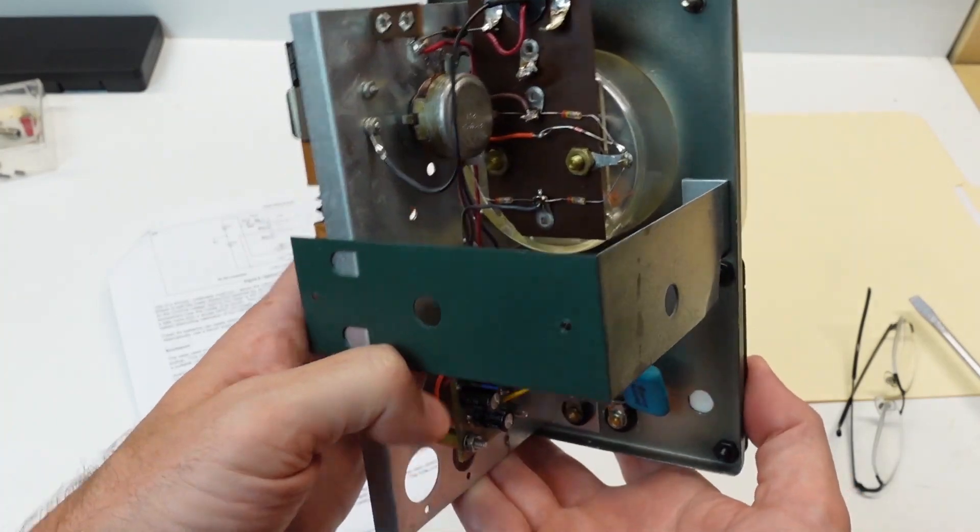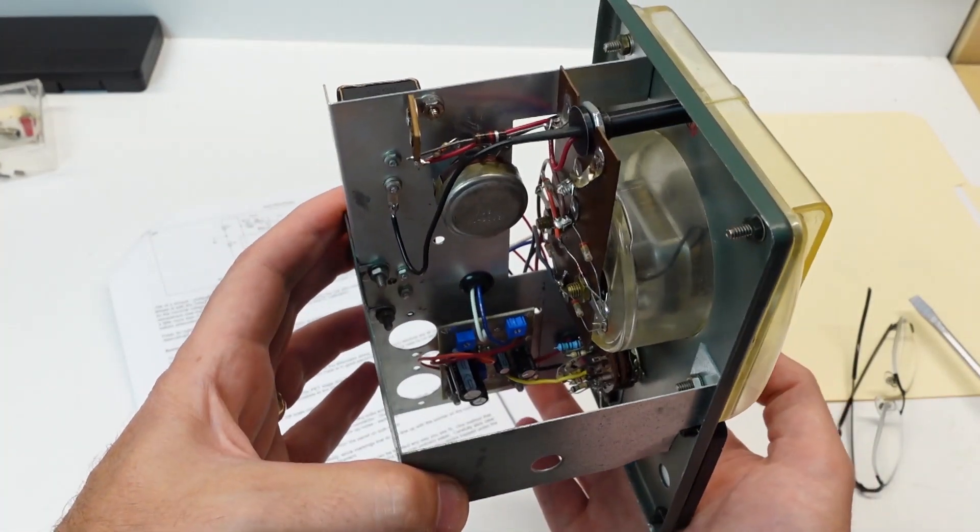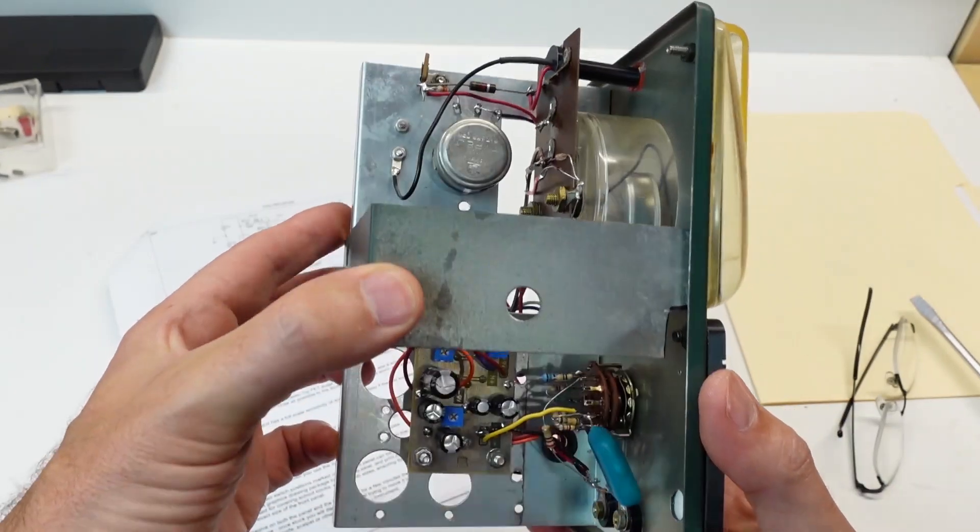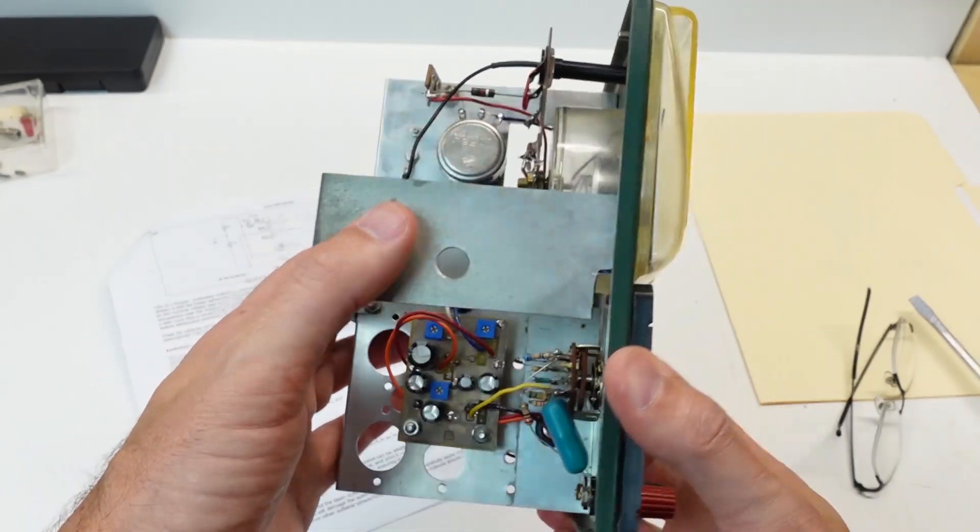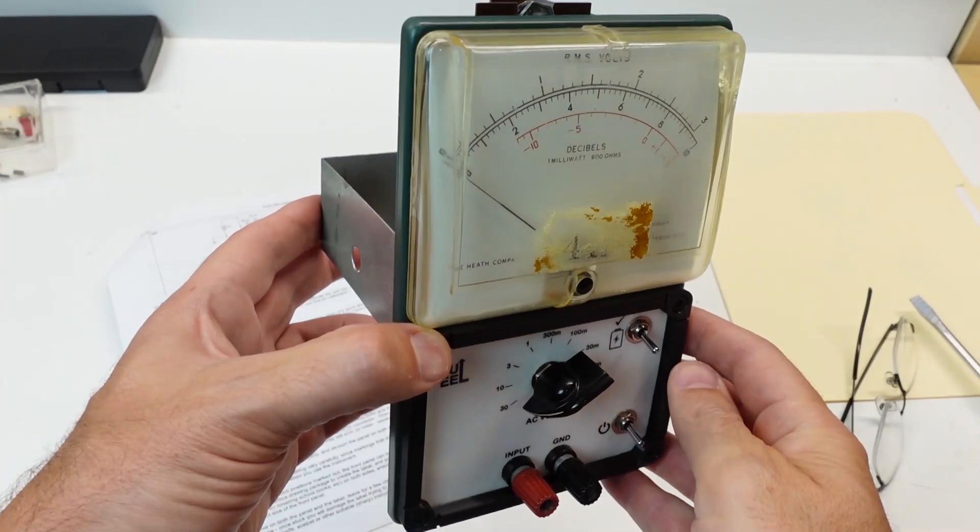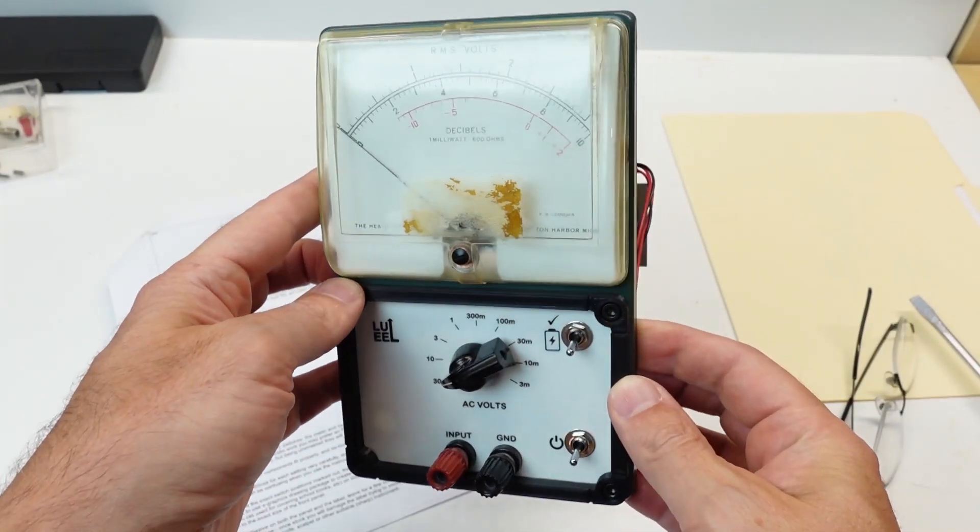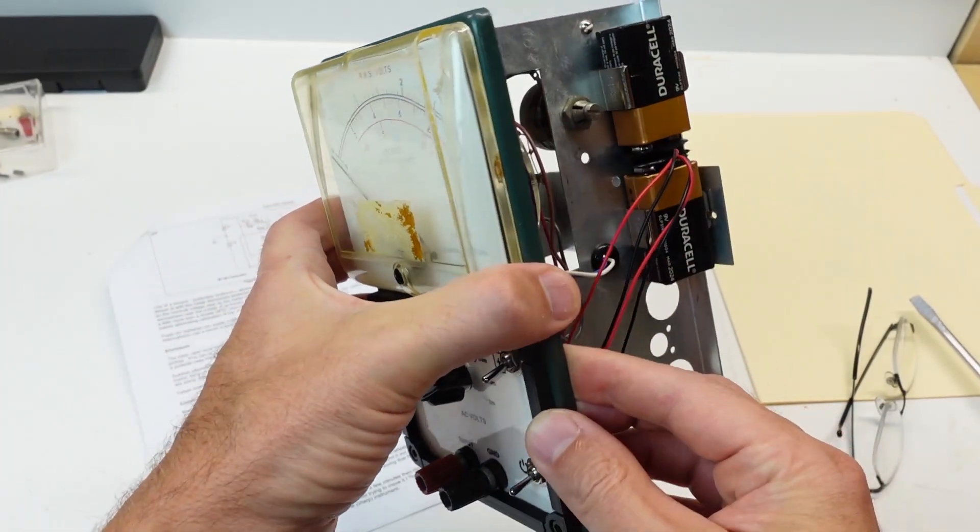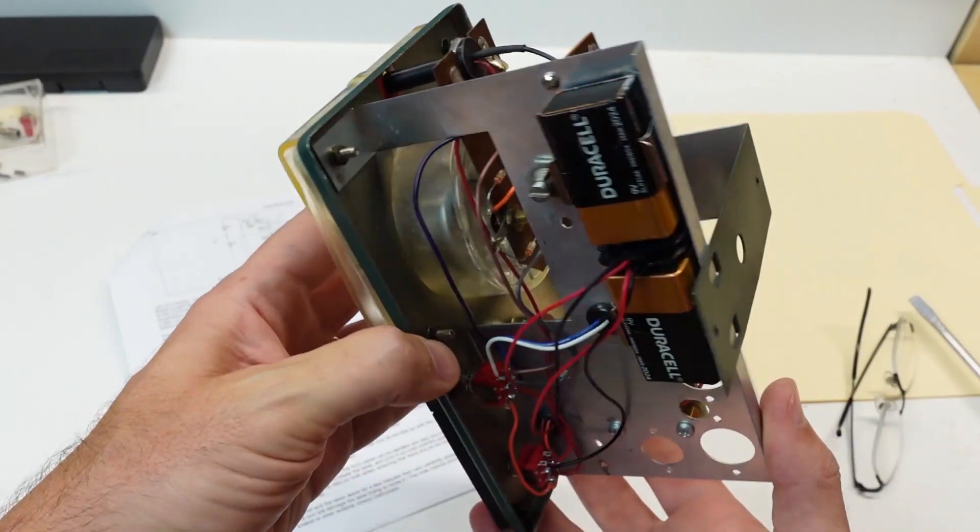Yep, there's a ton of open space now on the inside, and the chassis sure looks like a piece of Swiss cheese with all of those unused holes. You may have noticed that old-school style potentiometer at the top of the chassis. It's for calibrating the battery check function, and that's what I'm going to demonstrate next.